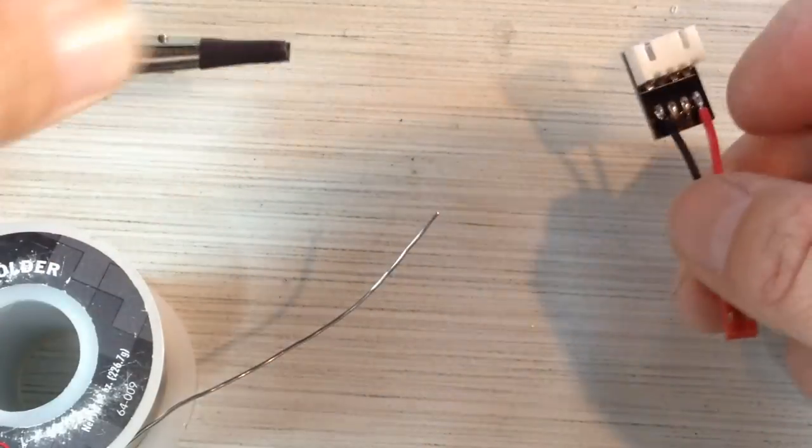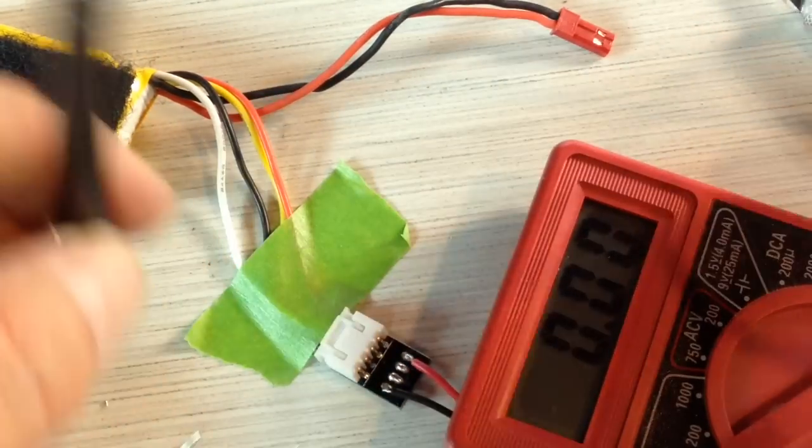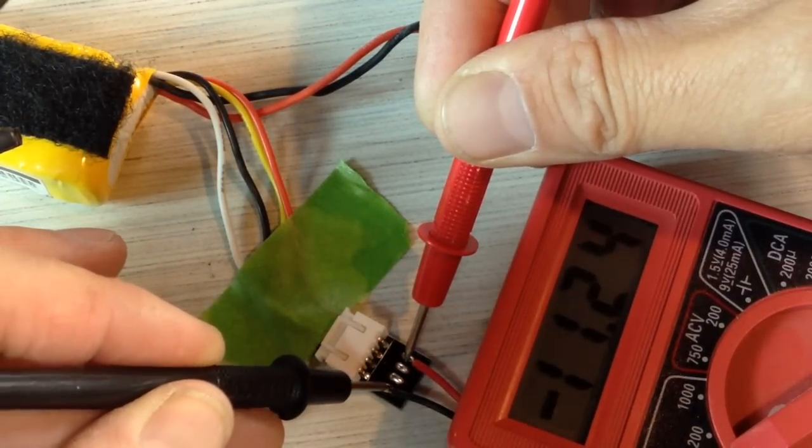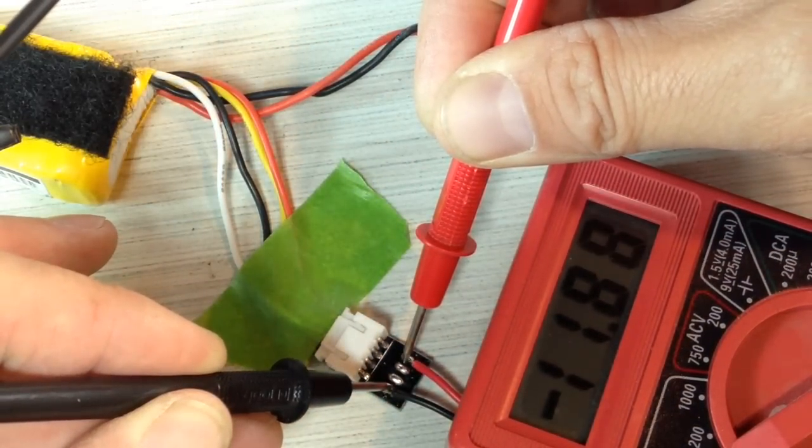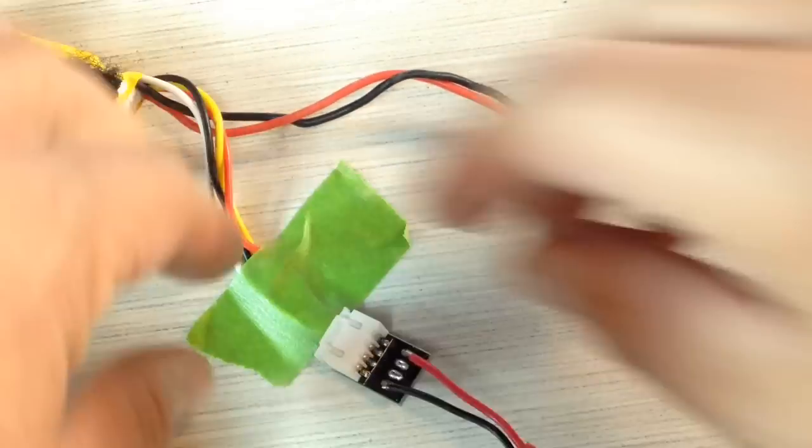Okay, so guys, let's go ahead and test this real quick. Okay, positive to positive, negative to negative. Let's put this like this. We'll see how much voltage is coming off of here. And we're getting 11 volts. So that's perfect. So this is going to power our VTX.